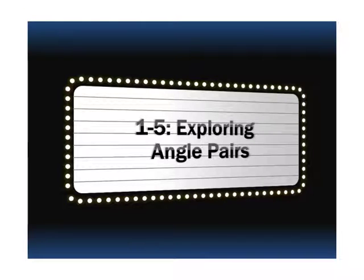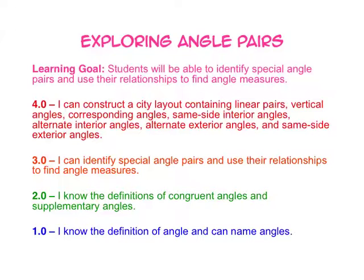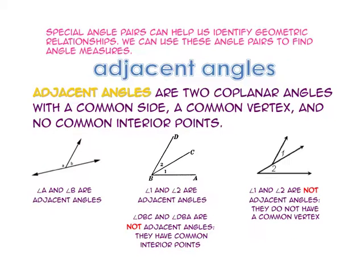Unit 1-5 is exploring angle pairs. Read the learning goal on the scale and figure out where you are before we go over the lesson. Special angle pairs can help us identify geometric relationships, and we can use these angle pairs to find angle measures.